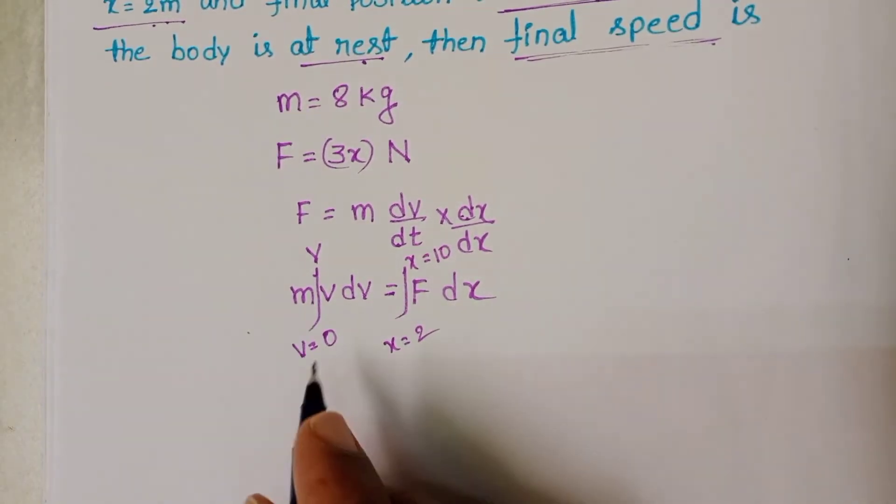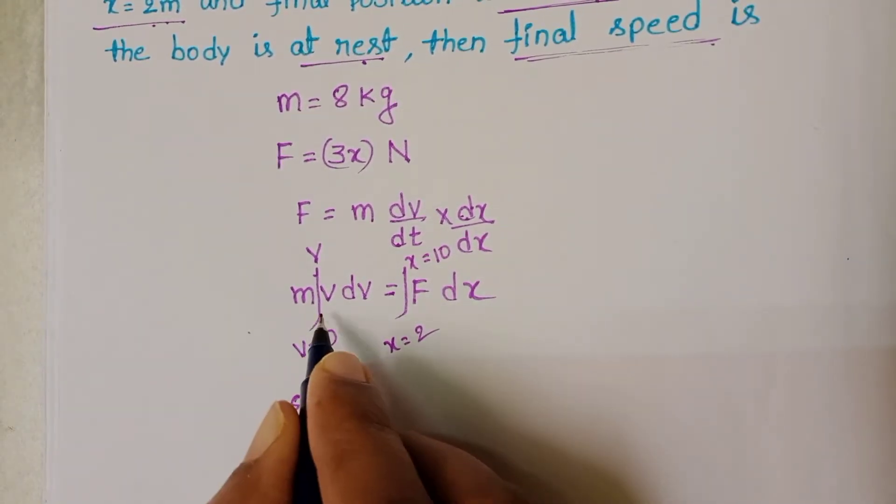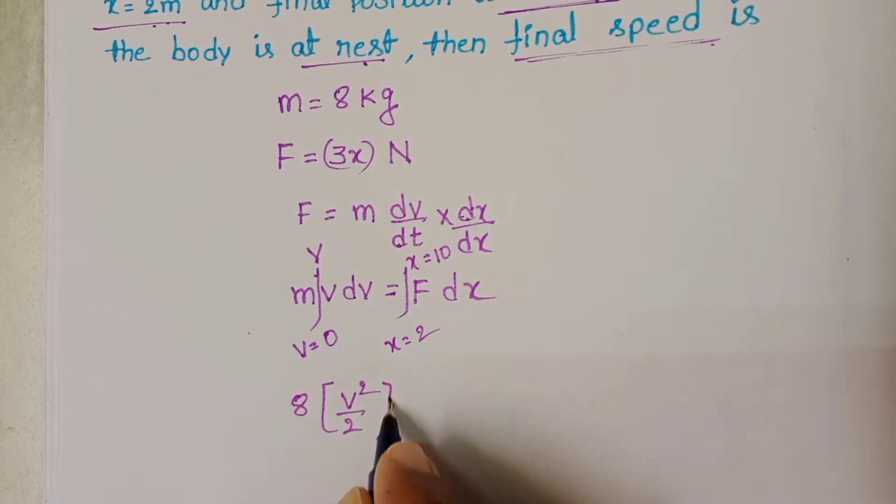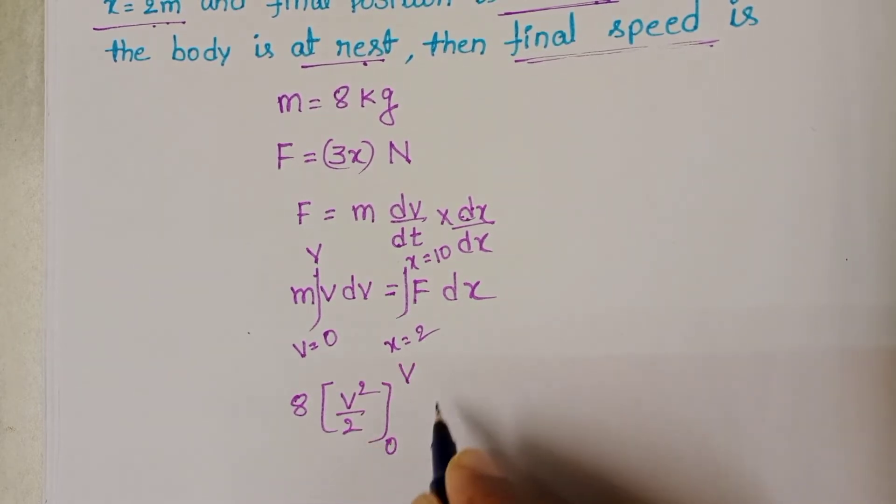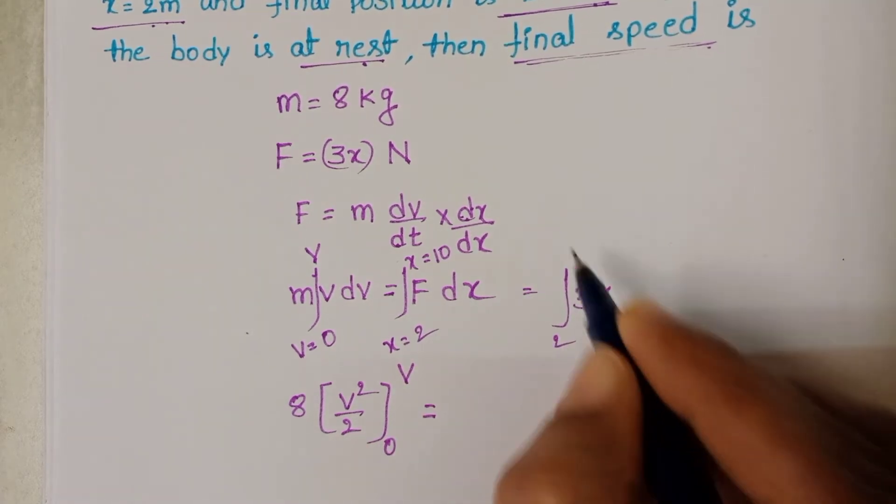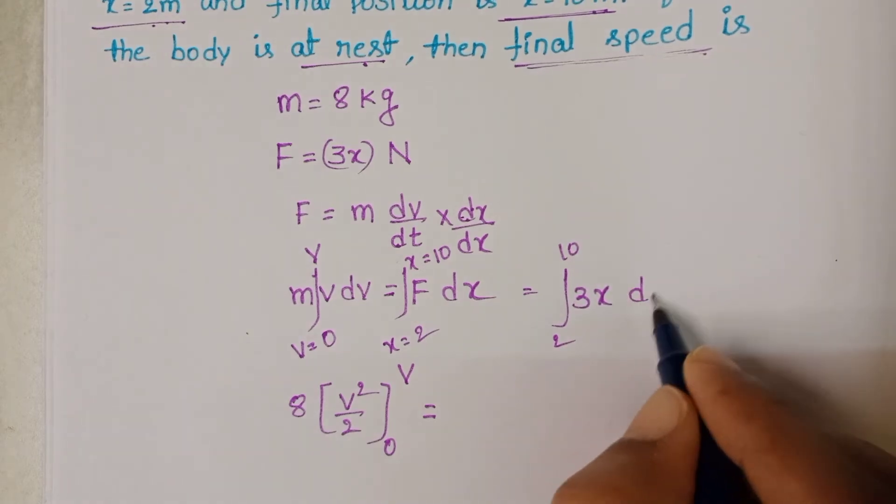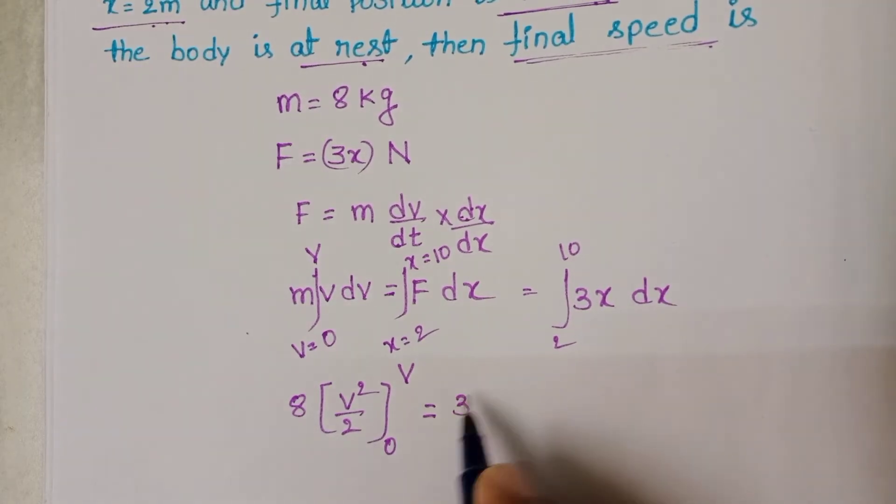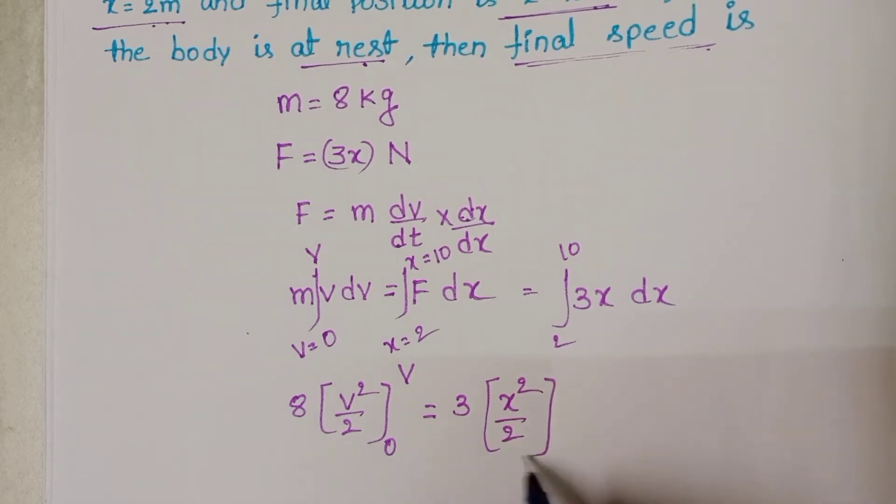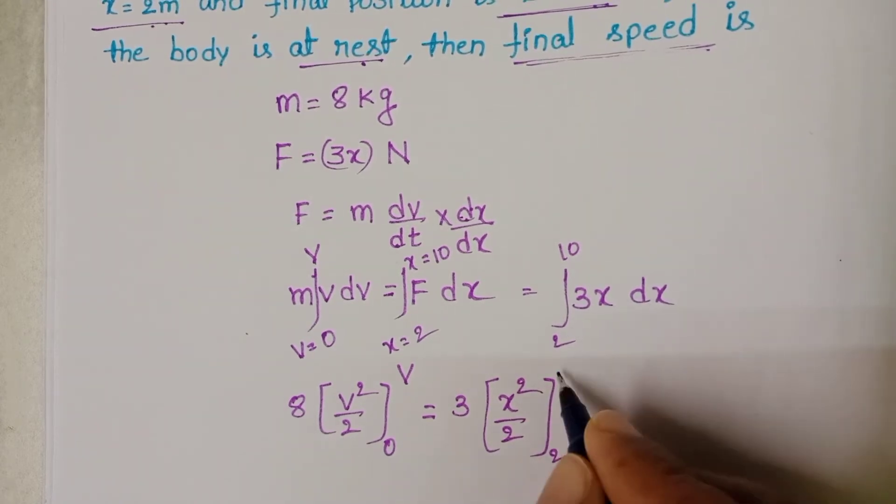Now we know mass equals 8 kg. Integral v dv equals v square by 2 and limits from 0 to v. And in place of the force 3x, here 3 is constant, integral x dx equals x square by 2, and limits from 2 to 10.